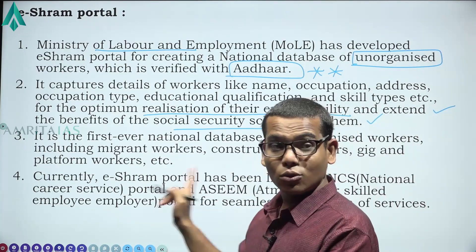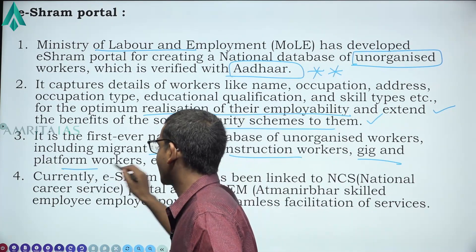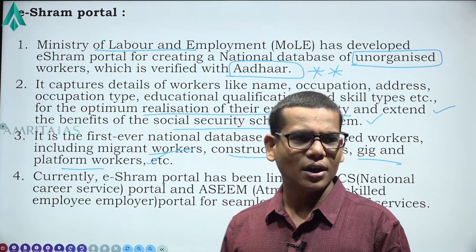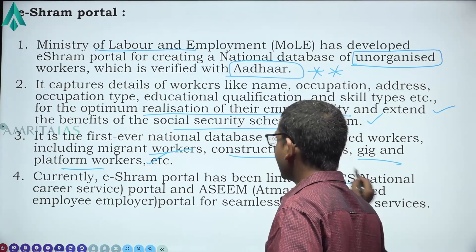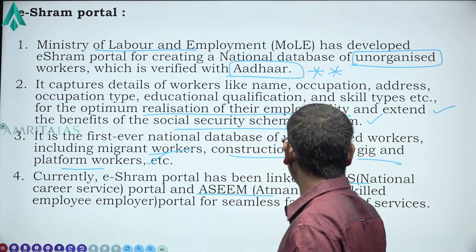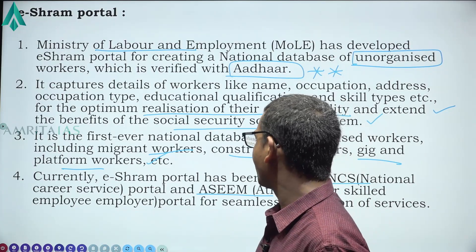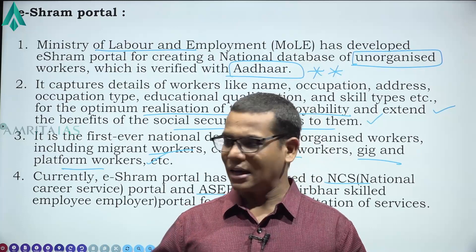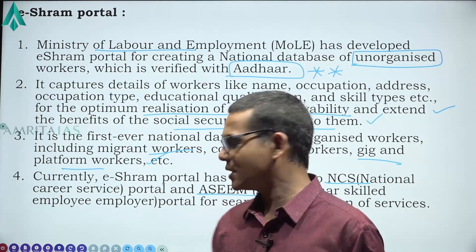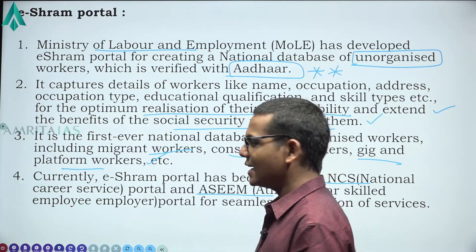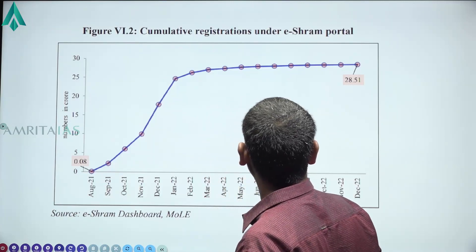The ESHRAM portal is the first-ever national database of unorganised workers, including migrant workers, construction workers, and gig and platform workers — who after the new labour codes are given equal importance. The portal has been linked to the National Career Service portal for skill enhancement and to the ASIM (Aatman Nirbhar Skilled Employee Employer Mapping) portal for matching workers with employers. Cumulative registrations on the ESHRAM portal stand at 26.51 crore.